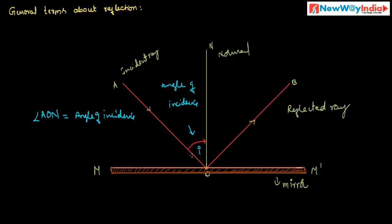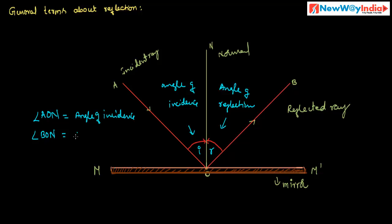Next, angle of reflection. The angle made by the reflected ray with the normal is called angle of reflection. It is represented by R. Here, angle BON is the angle of reflection.